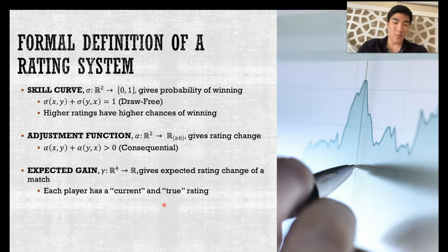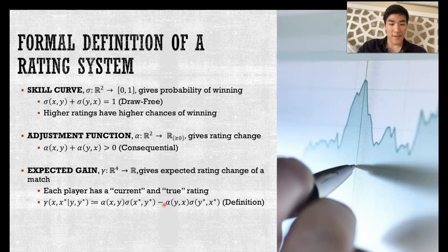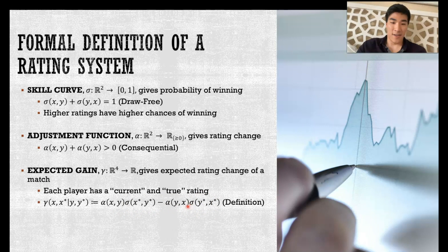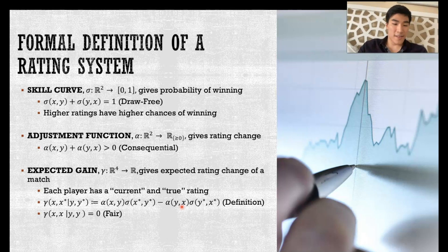Additionally, we cannot just have an arbitrary skill curve and adjustment function — we have to have a fairness axiom, which we state in terms of an expected gain function. For this function, we follow the model that every single player has a current and true rating. The current rating is what the rating system thinks your rating should be, and the true rating is what actually determines the probability of you winning a match, denoted by a star. Our expected gain function has four inputs — the first two associated with the first player and the second two with the second player — and equals the probability of winning times the rating gain if you win, subtracted by the probability of losing times the rating loss if you lose. This is essentially the expected value of the rating change. The fairness axiom states that if both players are correctly rated, the expected gain should be zero.